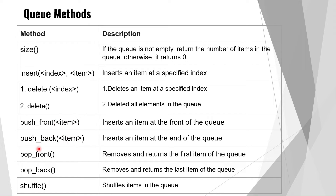The push_front method inserts an item at the front of the queue — whatever item you specify in the parentheses will always be stored at the zeroth index. The push_back method inserts an item at the end of the queue. Unlike push_front, where you know the element goes to index zero, push_back places the element at the back.